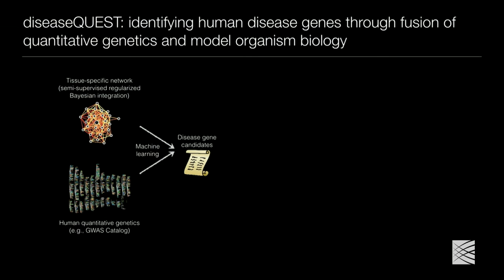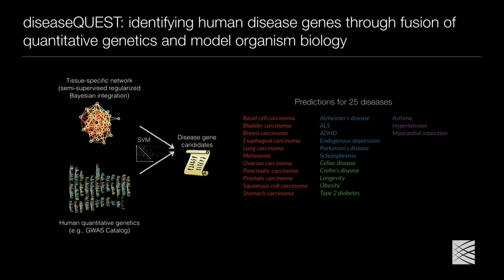We use an SVM and make predictions for 25 diseases, colored by disease category: nervous system diseases, cancer, metabolic, and muscular diseases. We take reported GWAS genes for each disease, transfer them into worm, use the relevant tissue network, use the network as features, and predict genes that have similar network features. The idea is that these might be good disease candidates for follow-up screening in worm for human disease.